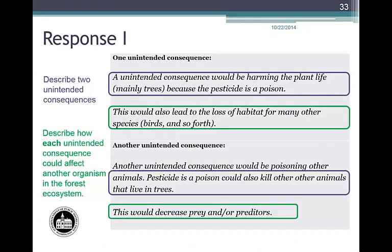Our final response is Student Response I. First unintended consequence: 'harming the plant life, mainly trees, because the pesticide is a poison' — and the effect — 'this would lead to the loss of habitat for many other species, birds, and so forth' — earns one point. Second unintended consequence: 'pesticide could kill other animals that live in the trees' — and the effect — 'this would decrease prey and/or predators' — also earns one point. Response I earns a total of two points.